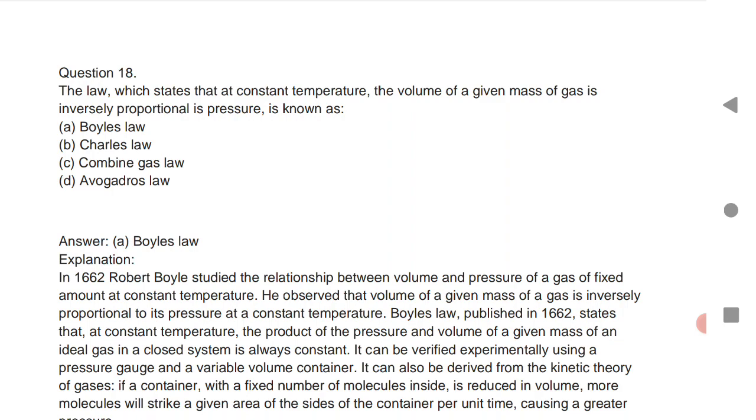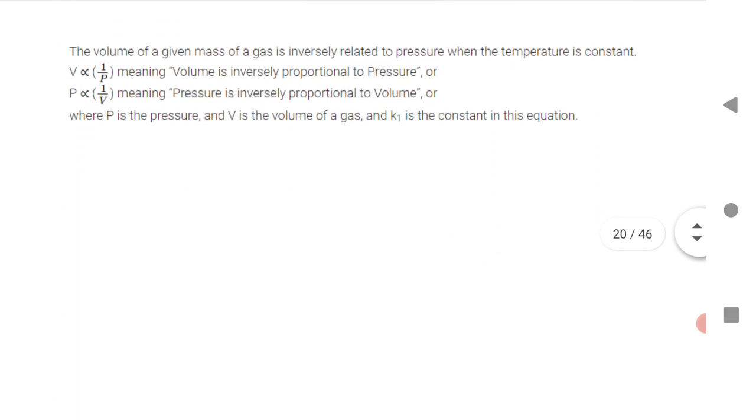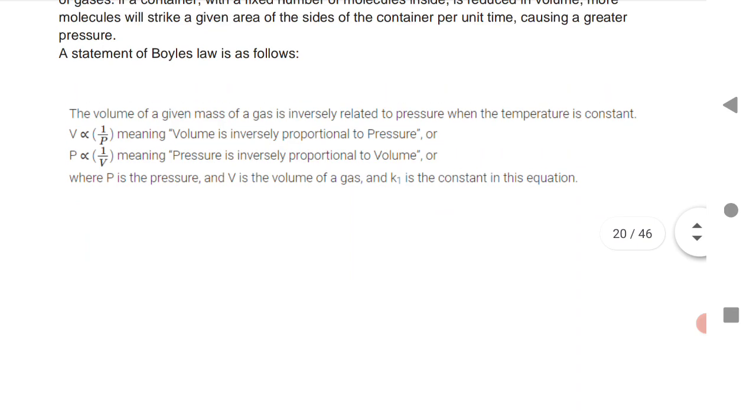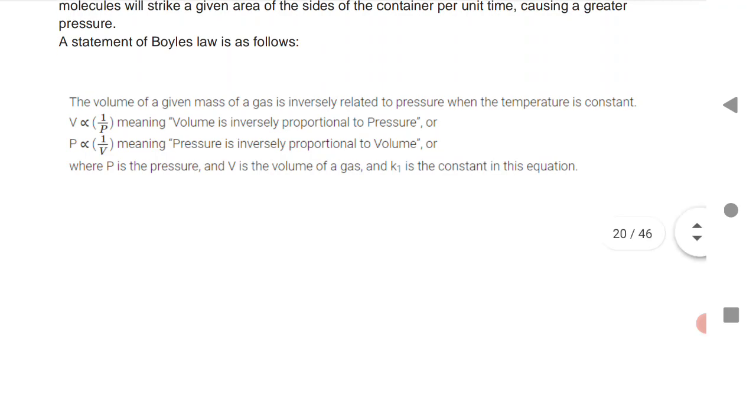The law which states that at constant temperature, the volume of a given mass of gas is inversely proportional to pressure - that is Boyle's law. Very important. Boyle's law said volume is inversely proportional to P and pressure is inversely proportional to V. This is Graham's law.